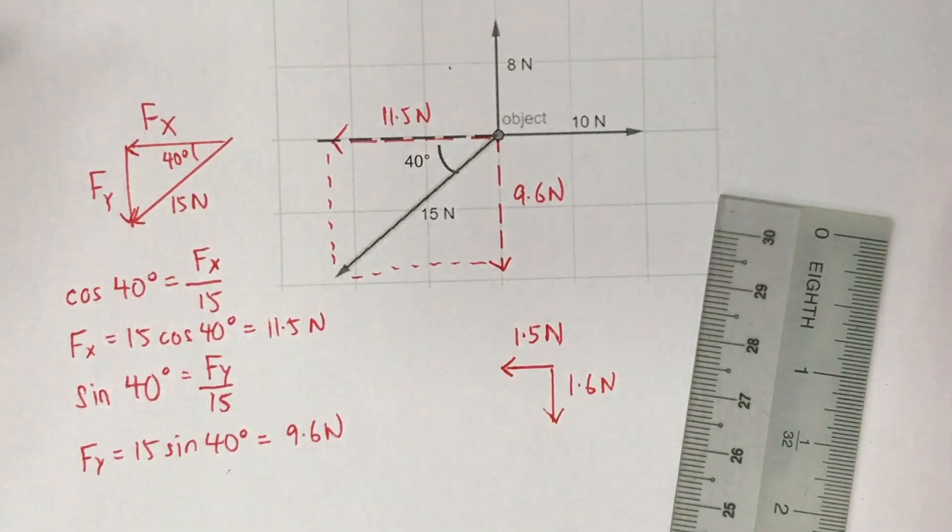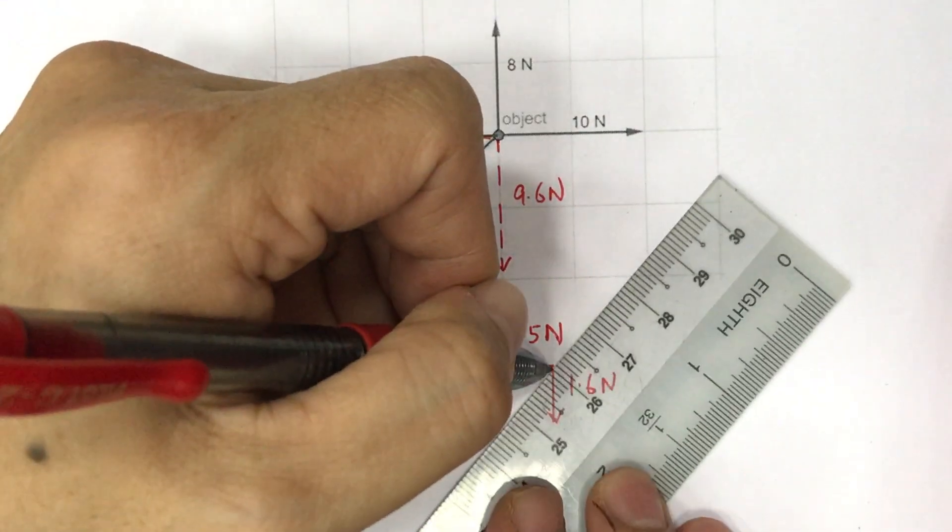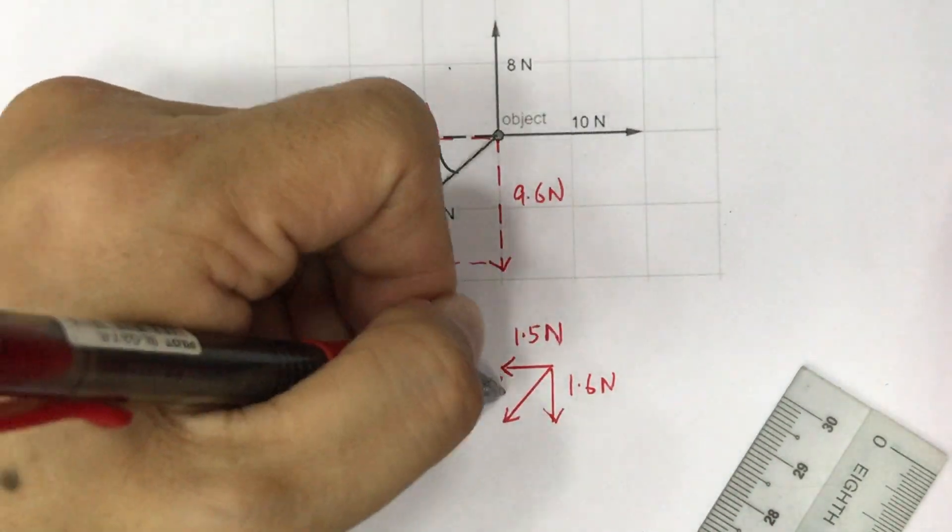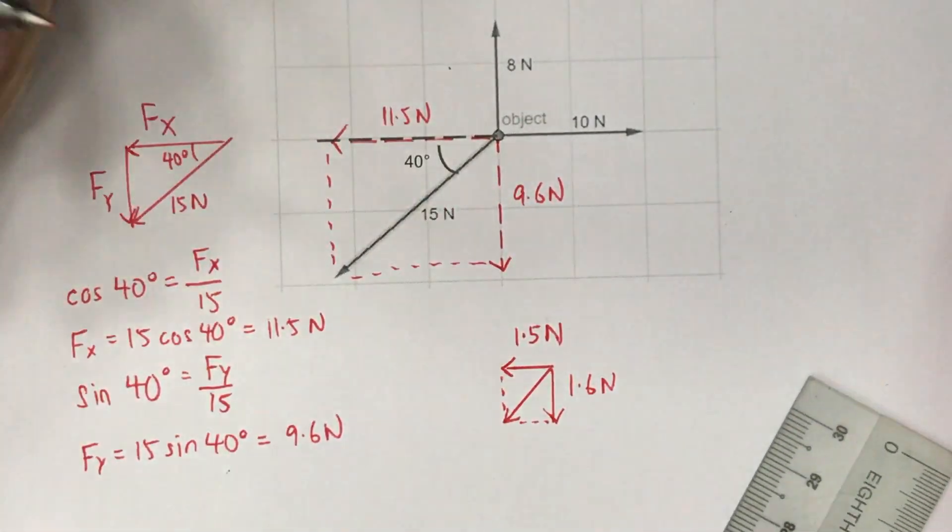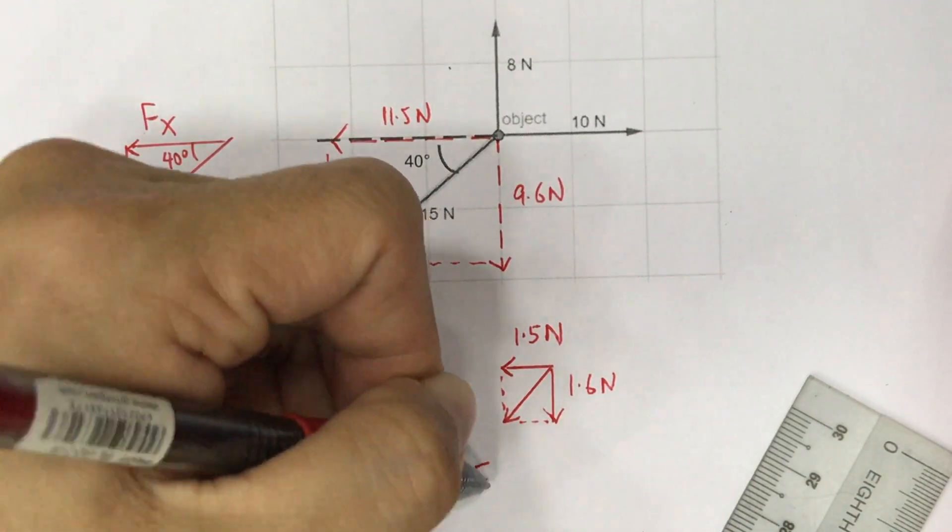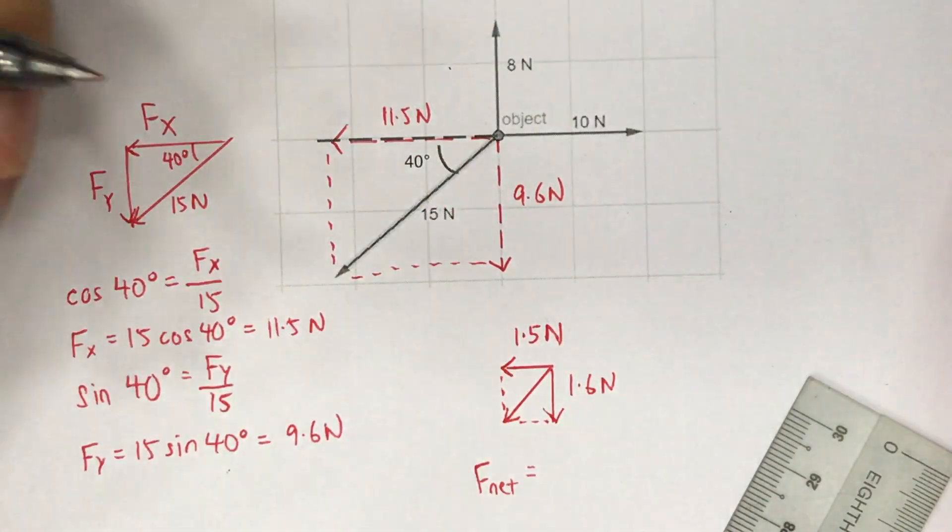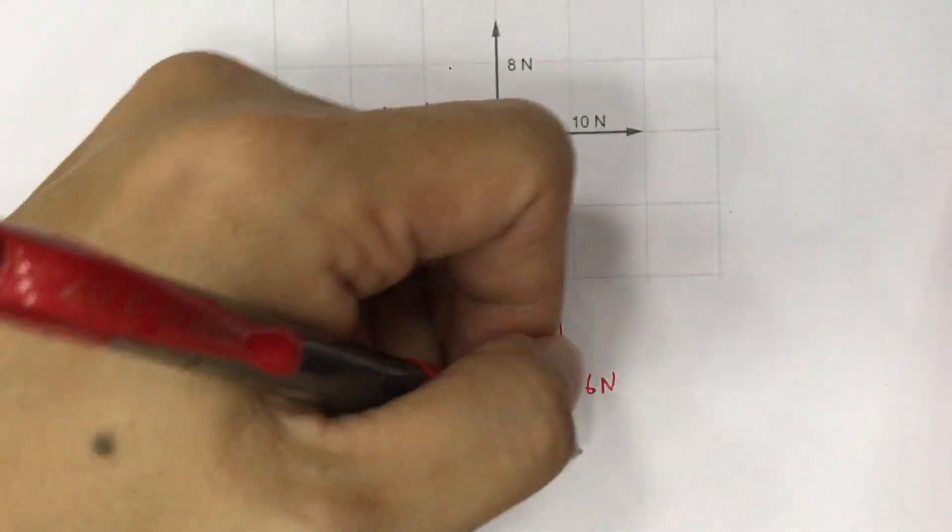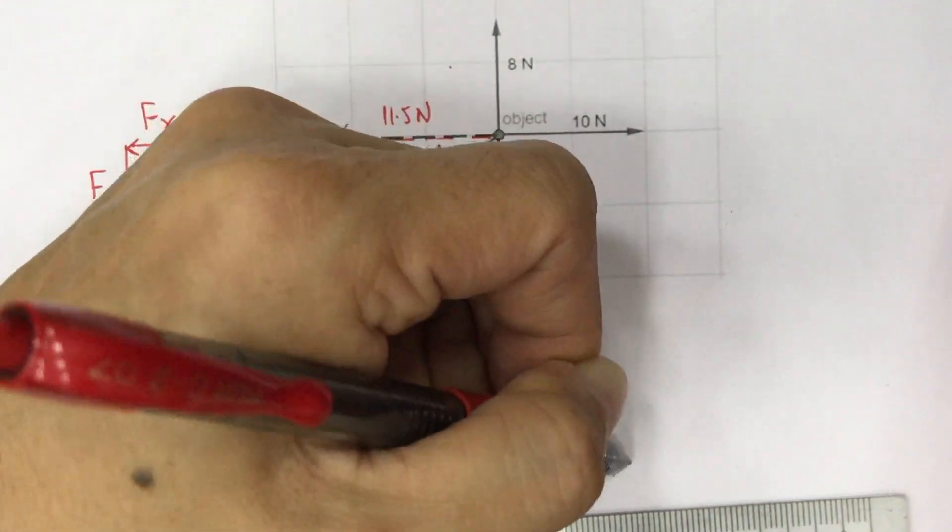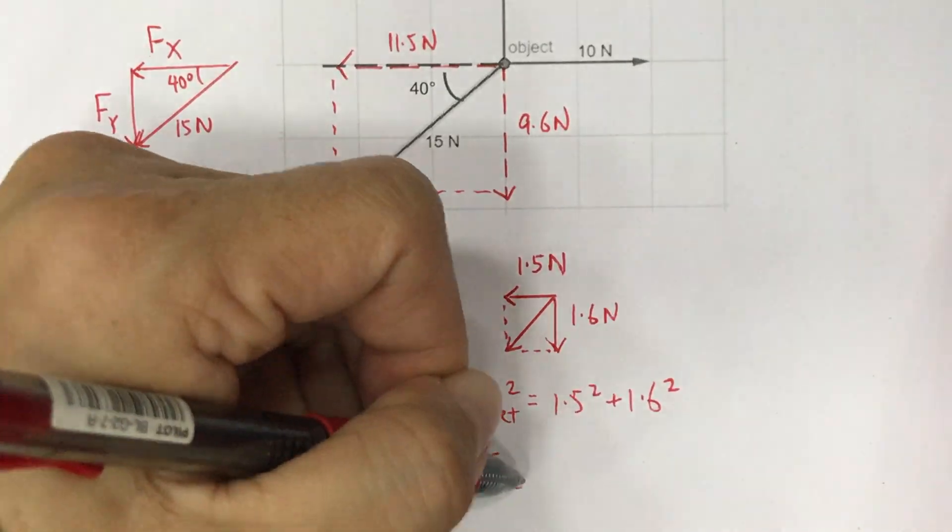So now we have a vertical and a horizontal component of the net force. We can find the magnitude of the net force by adding these two vectors up. The diagonal to the rectangle will be the vector of f net, the net force. And what we can do to find the magnitude is to use Pythagoras theorem. So the square of the magnitude of the net force equals to the sum of the square of the sides. f net equals to 2.2N.